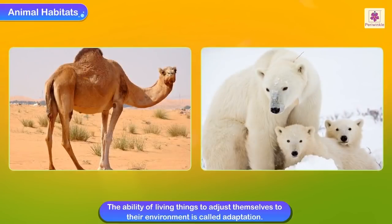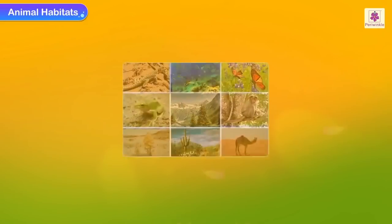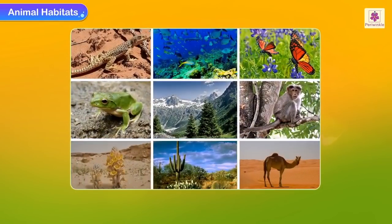The ability of living things to adjust themselves to their environment is called adaptation. It is because living things can adapt themselves to different environments that we have such a wide variety of flora and fauna all over the earth.